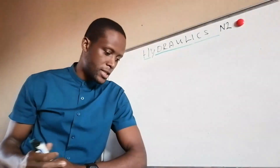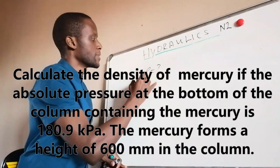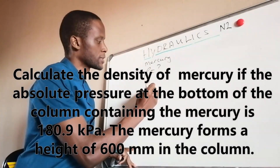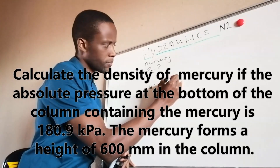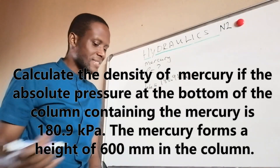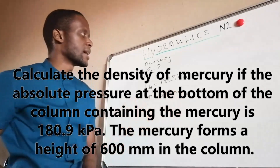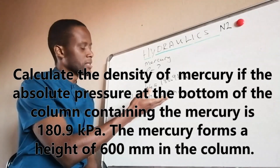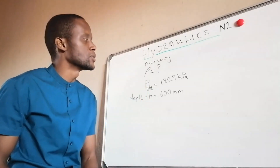Our next question reads: calculate the density of mercury if the absolute pressure at the bottom of a column containing mercury is 180.9 kilopascal, and the mercury forms a height of 600 millimeters in the column. It is very important to know what kind of pressure you're dealing with — in this case it is absolute pressure.